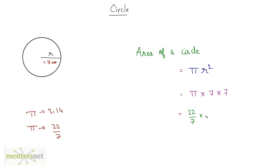Taking the value of pi as 22 by 7, we get 22 by 7 times 7 times 7, one of the 7's get cancelled out. What we have is 22 times 7, so 22 times 7 is 154 square cm as the area of this circle.